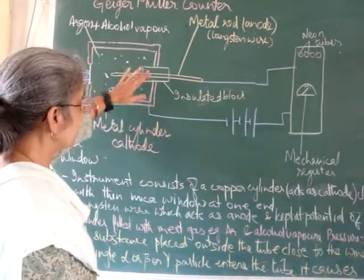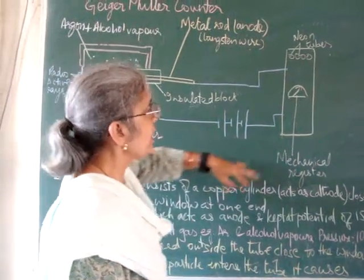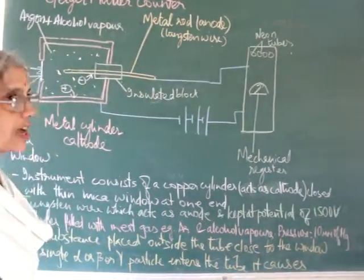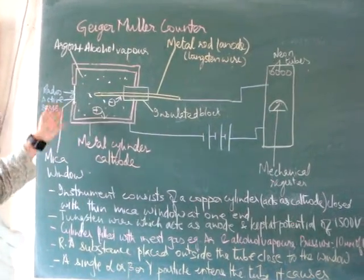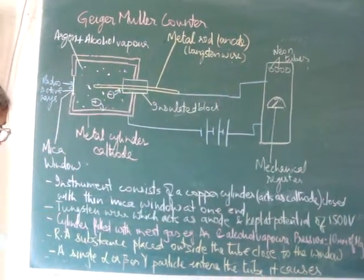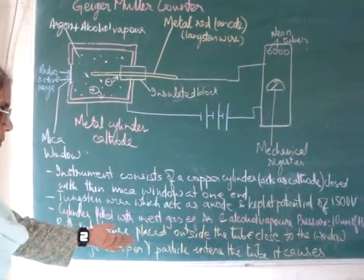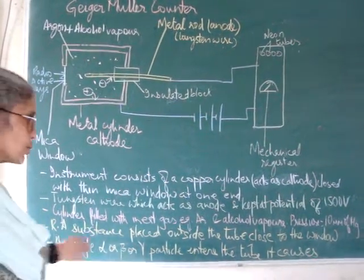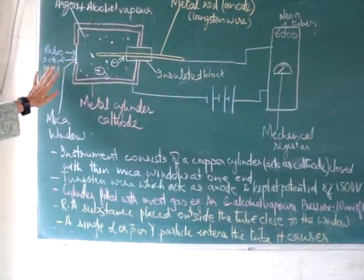The anode and cathode are connected by an external circuit through a battery to a mechanical register which measures the amount of current produced by the sample. The radioactive substance is placed outside the tube close to the window. When a single alpha or beta ray enters the tube,